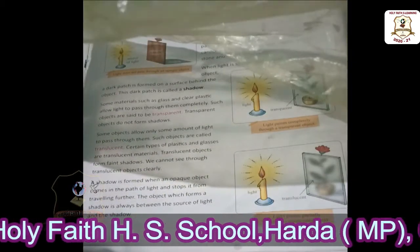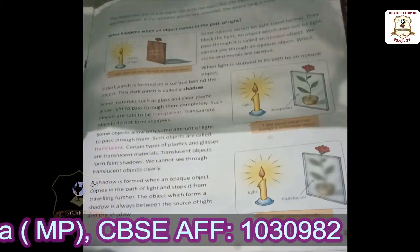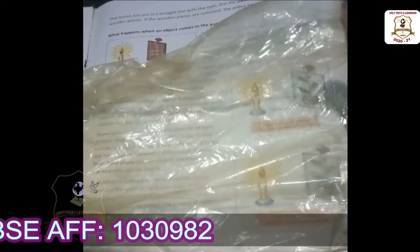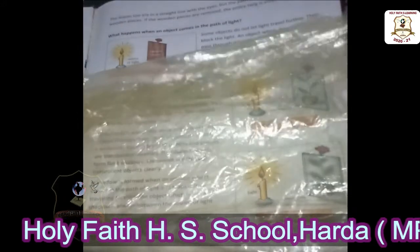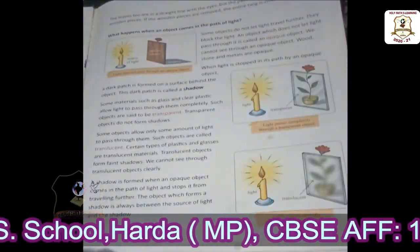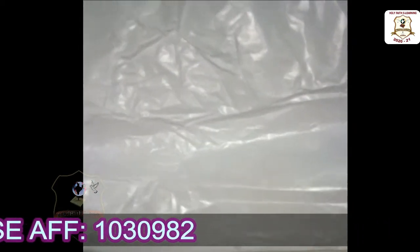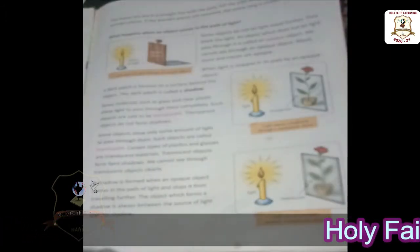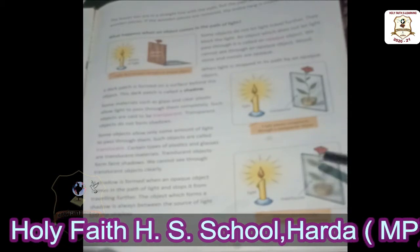We cannot see through a translucent object clearly — we can see something but it is not clear. Wax paper is also an example of a translucent object. See this glass — it is a kind of translucent glass. We can see through it, but it is not clear.